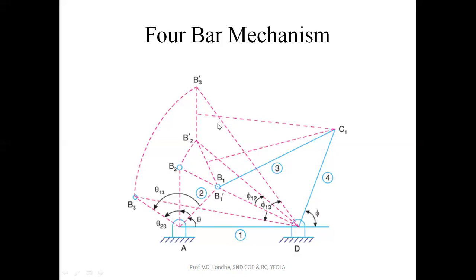After plotting the angles, we draw lines joined at point D. Then with the help of a compass, we mark an arc from B3 which will join the B3-dash line. The arc drawn from B2 with center D will join the reference line B2-dash at the corresponding point.